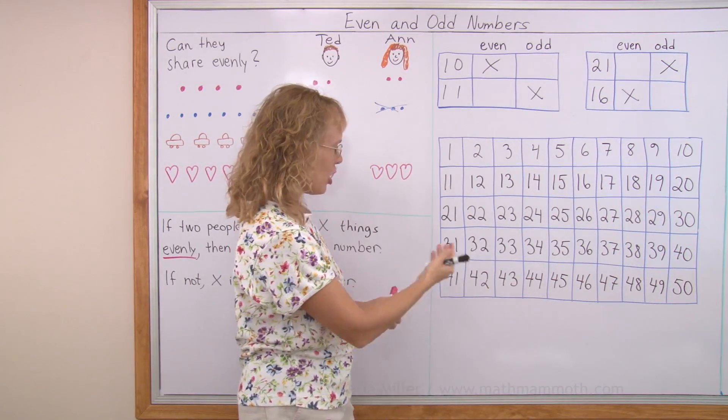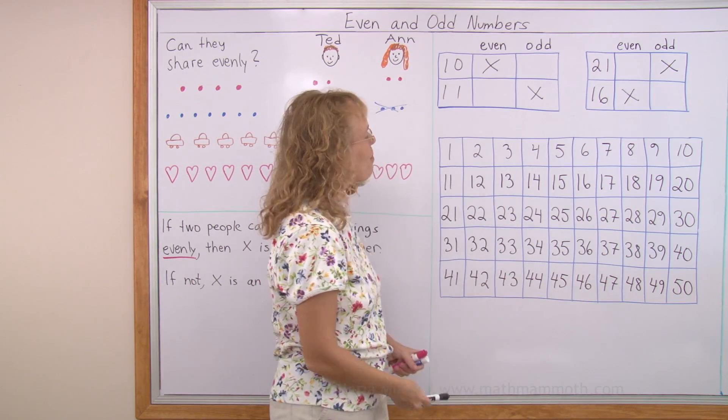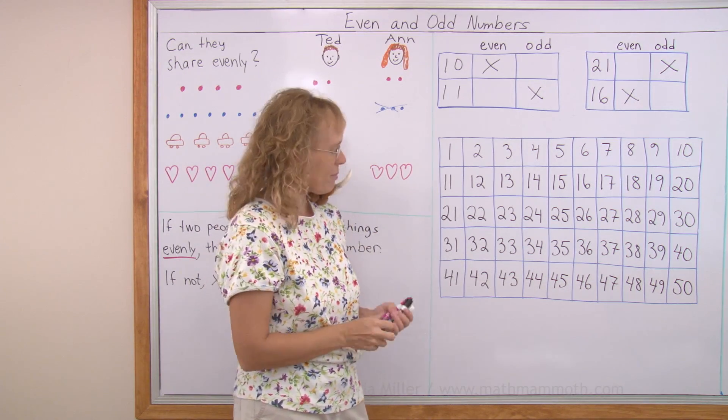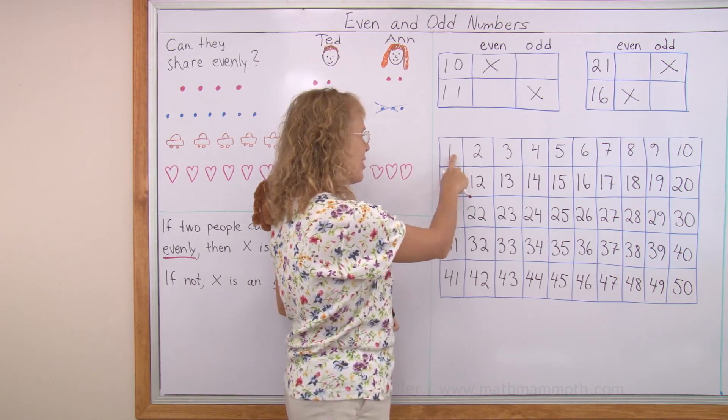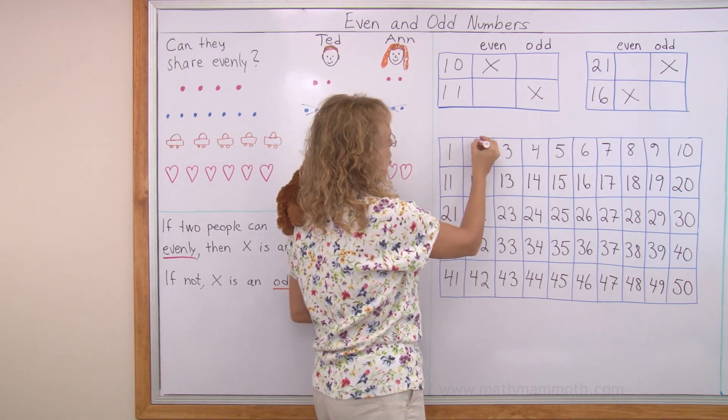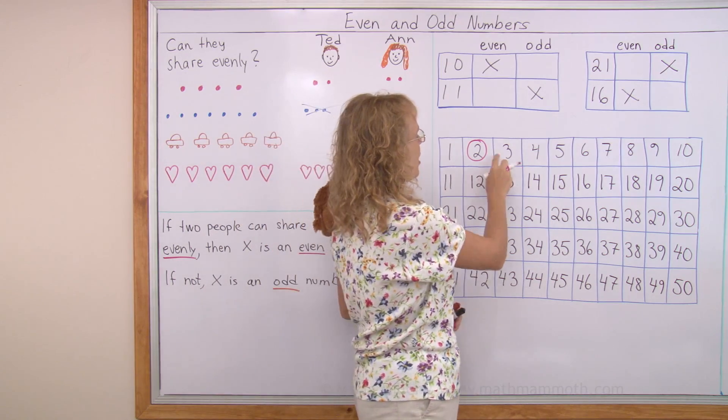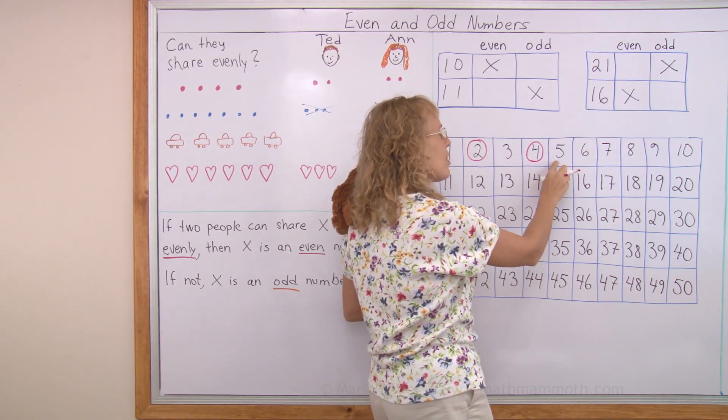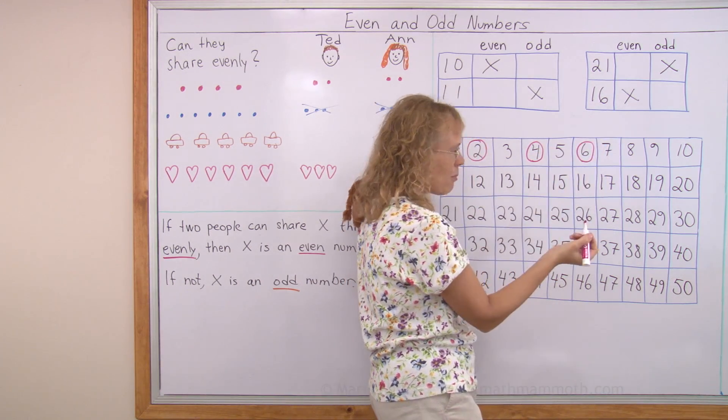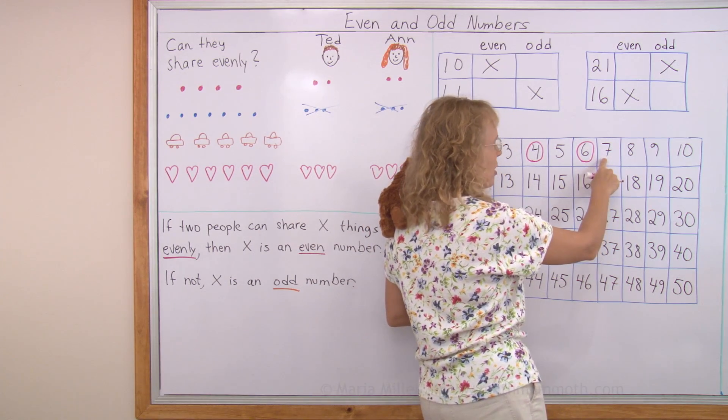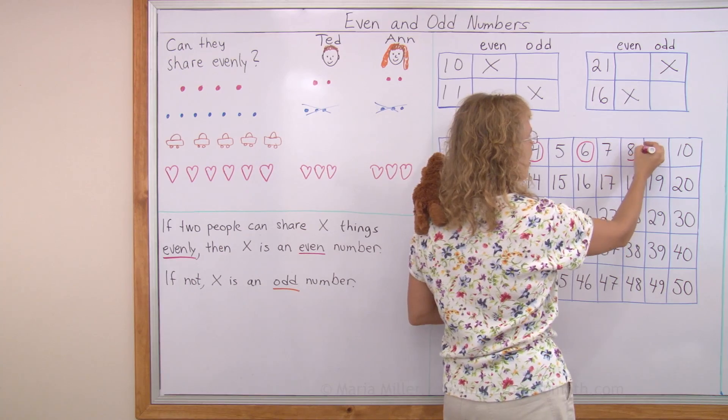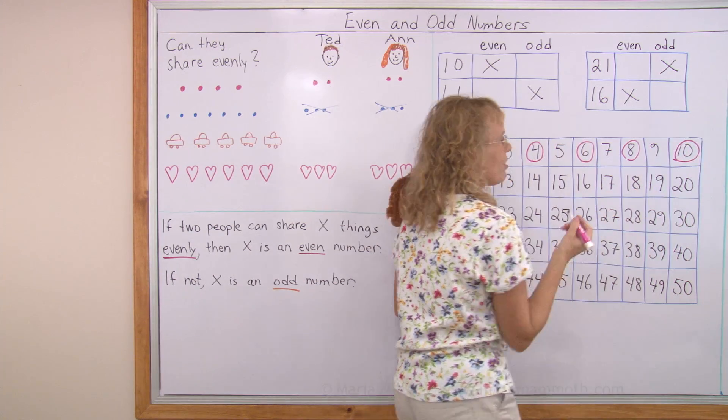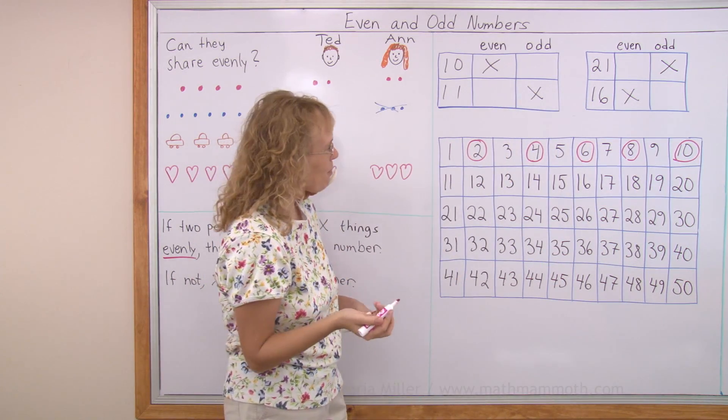Now, here I have some of the hundred chart. I wrote it up to fifty, okay? A number chart. And now we're going to circle all the even numbers here. So, you will see a pattern. First of all, now one is an odd number. You cannot share evenly if you have one thing. But two, you can share evenly two things. Three, you cannot share evenly, right? One, two, three. Four, you can share evenly. Five, you cannot. Six is an even number. Seven is not, because it's just one more than six. Eight, you can share evenly. Four and four. Nine, you cannot. Ten, you can, because it's five and five. Each person would get five. And so on.